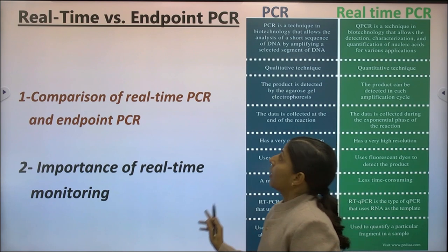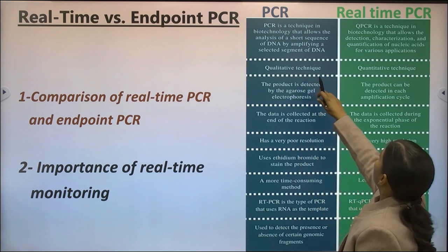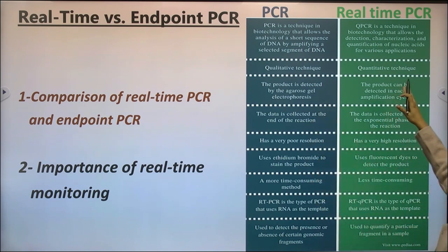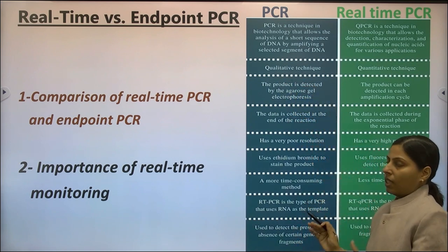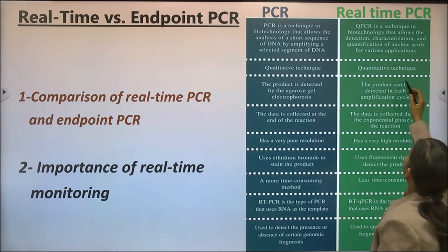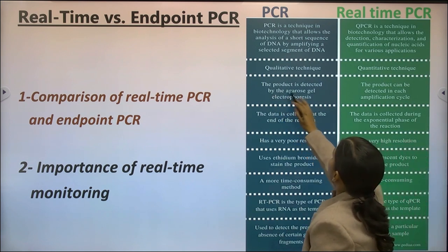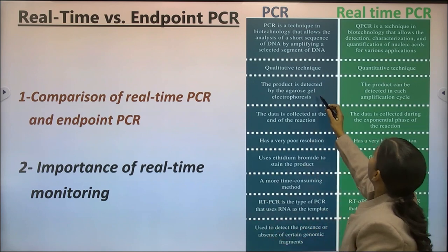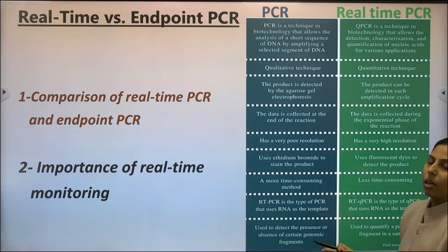The difference between real-time PCR and conventional PCR: in normal PCR, it allows analysis of short sequences of DNA by amplifying a selected segment, and it is a qualitative technique that determines the presence or absence of a gene. In real-time PCR, it is a quantitative technique — we can quantify the amplified product. In conventional PCR, the product is detected by agarose gel electrophoresis after amplification, whereas in real-time PCR the product can be detected at each amplification cycle.